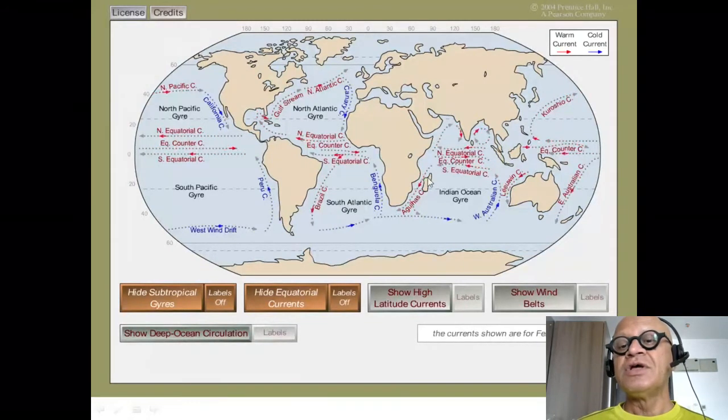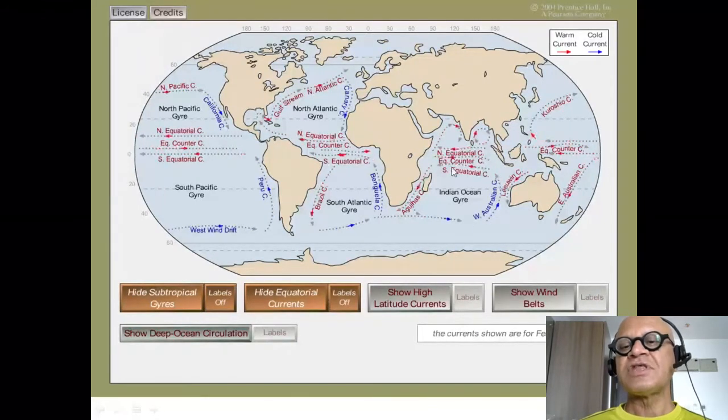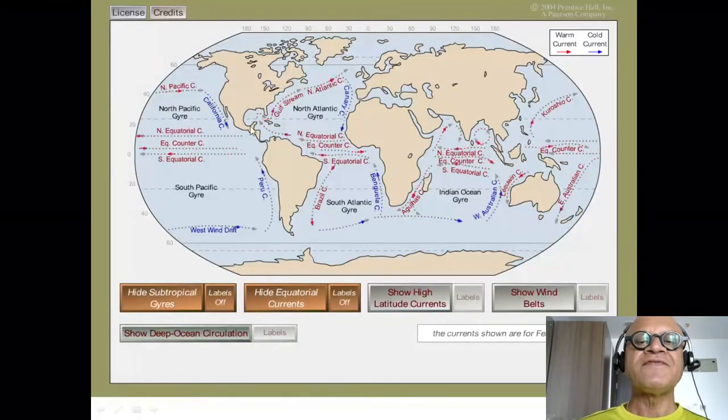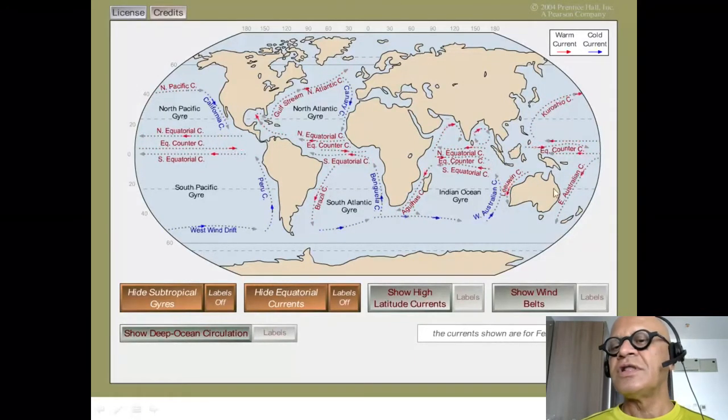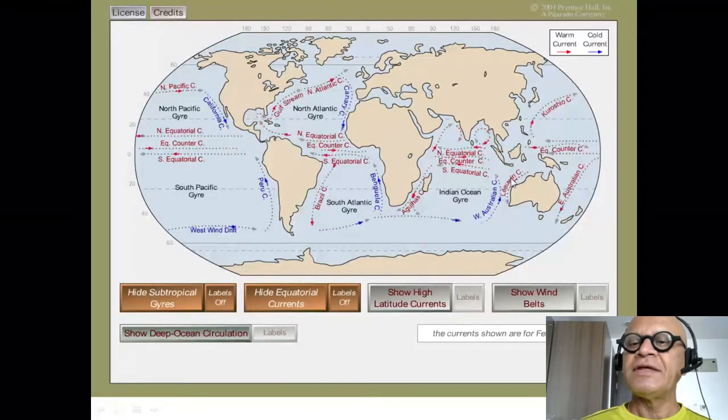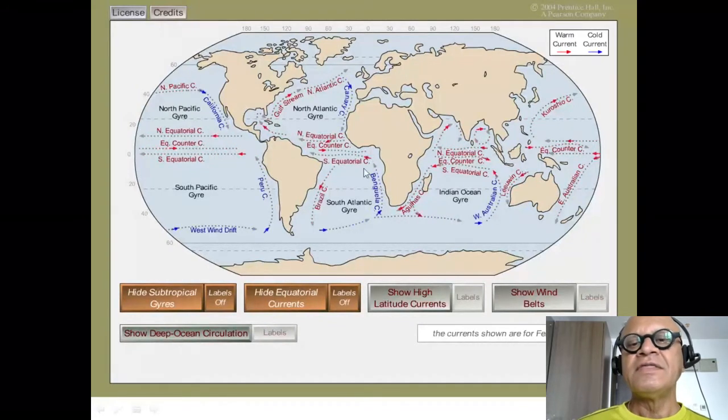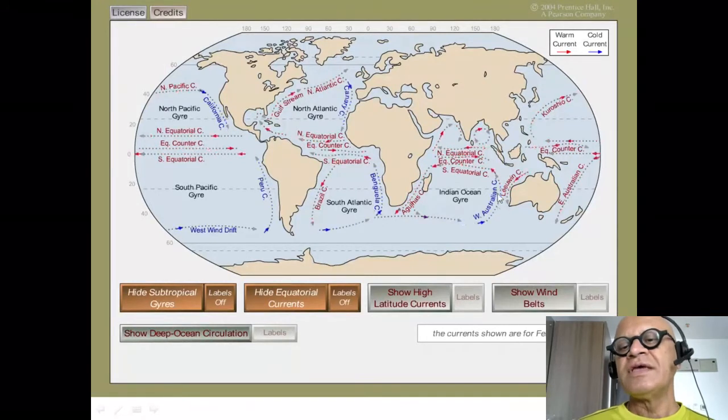The Equatorial Counter Current is in the southern hemisphere. There is a South Equatorial Current in the southern hemisphere. You have the Gulf Stream, the Kuroshio, Brazil Current, the Agulhas Current, Leeuwin Current, East Australian Current, and so on. You'll see here that unlike the Canary Current, Benguela Current, Peru Current, and California Current...